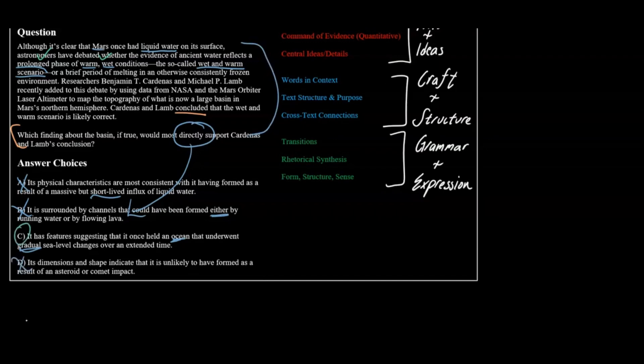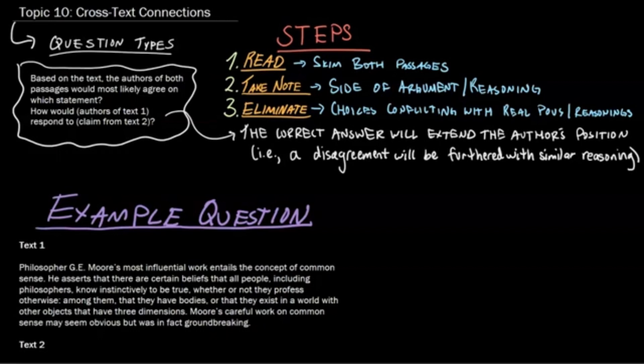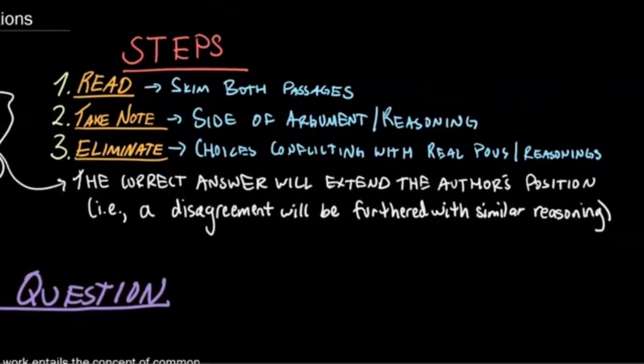All right, everybody, topic 10, cross-text connections, is our next topic here. So, question types: Based on the text, the authors of both passages would most likely agree on which statement, or how would the authors of text 1 respond to a claim from text 2, or text 2 to text 1, etc. Okay, these are pretty simple. They're kind of like rhetorical synthesis in that you do have to do a lot of reading sometimes, but here are steps to solve those types of problems. So, the first thing you're going to do, you want to skim passages. You don't necessarily need to read every word. Just make sure you get the general idea. Make sure you know which side of the argument both are on, which reasoning, what line of reasoning they have, etc. Then you're going to eliminate conflicting choices, or choices that conflict with these lines of reasoning and their points of view.